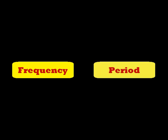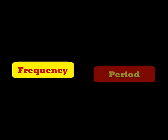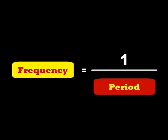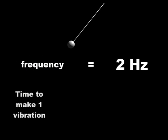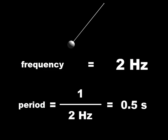If you know the frequency of a wave, you can easily calculate the period of the wave and vice versa, they're reciprocals of each other. If a pendulum makes two vibrations in one second, its frequency is two hertz. That means the time it takes to make one vibration, its period, is half a second.